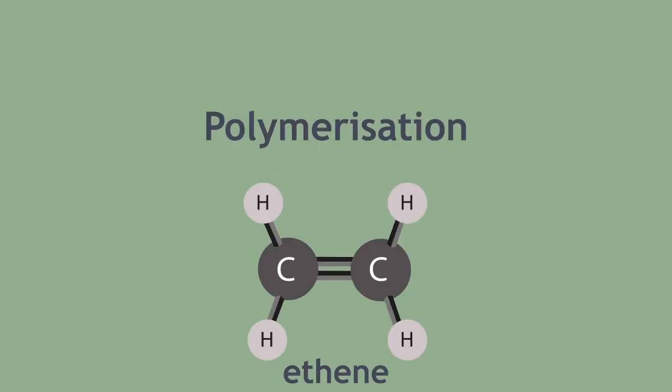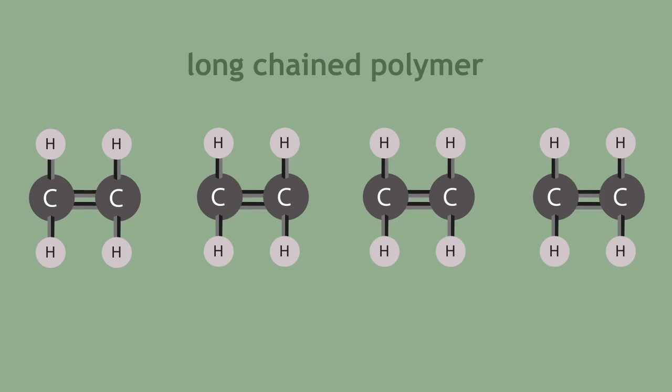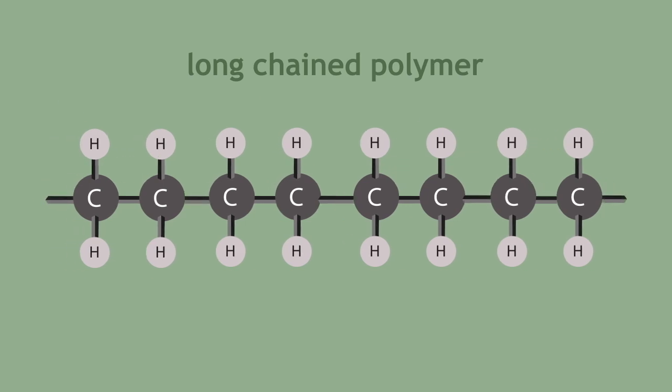Let us start by quickly reviewing the polymerisation of ethene. Here is an ethene molecule in a row and under high pressure the double bonds break and the remaining molecules attach in series to form a long chained polymer.